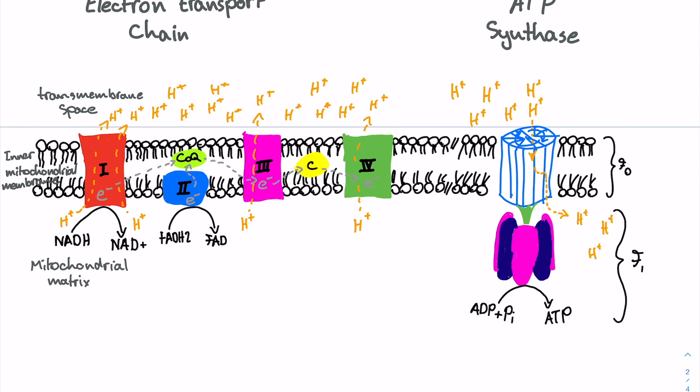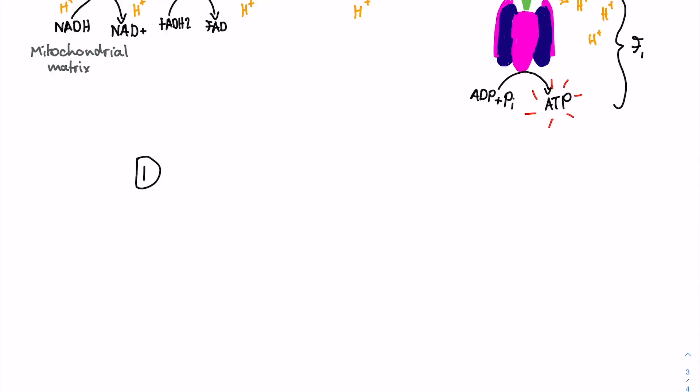In a healthy individual, this proton gradient allows ATP synthase to produce up to 100 to 150 ATP molecules per second. So now that we know what it looks like in a healthy individual, what is DNP doing to make John so very ill?